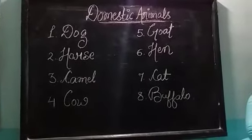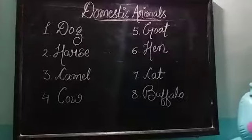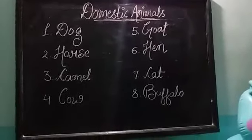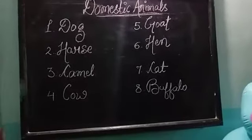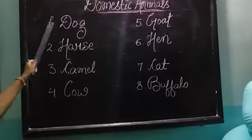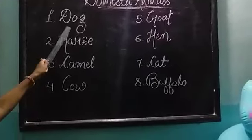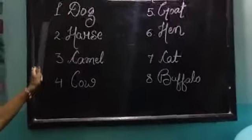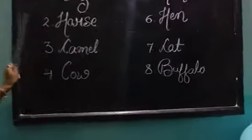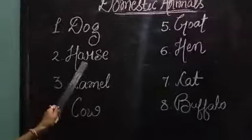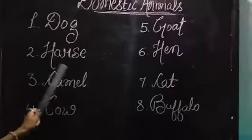See, we will learn some domestic animals' names. First one is dog. Second, horse — H-U-R-S-E — horse.